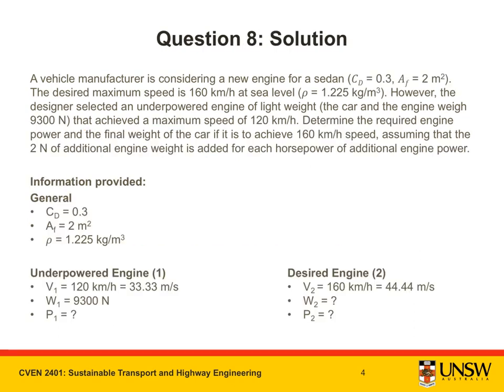Let's extract the information that we require. General information includes CD, AF and ρ. I've put those here. And then we have two cases, the underpowered engine and the desired engine, one and two. For the underpowered engine, we are told that its maximum velocity is 120 kilometers per hour. I need to convert this into meters per second for SI units. We also know that its weight is 9300 Newtons, and we don't know what its power is.